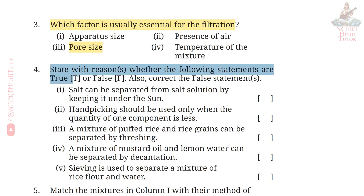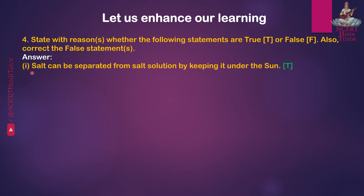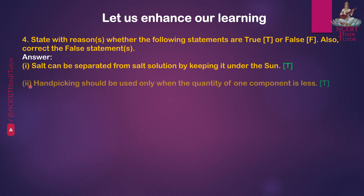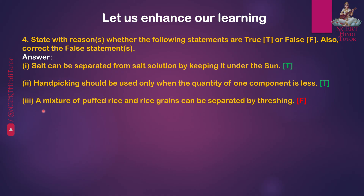Question 4: State with reasons whether the following statements are true (T) or false (F), and correct the false statements. Answer: First — Salt can be separated from salt solution by keeping it under the sun. This is True. Second — Hand picking should be used only when the quantity of one component is less. Answer: True.